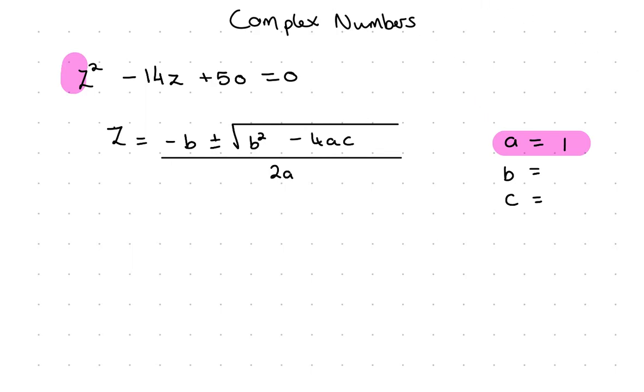Next I need to look at b, which is the number in front of the z, the coefficient on the z. I've got minus 14. My c is the constant, which is 50. C is always the constant.